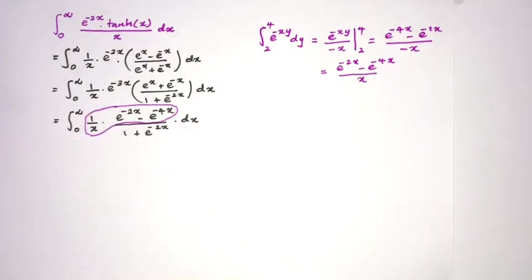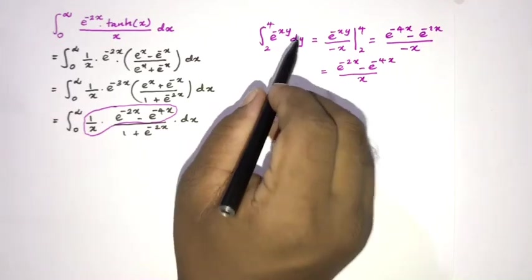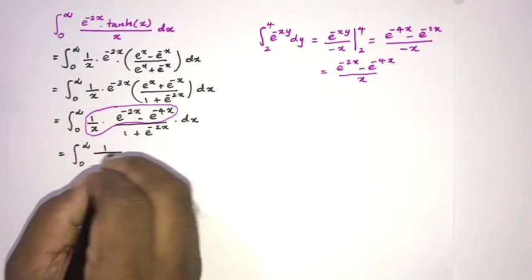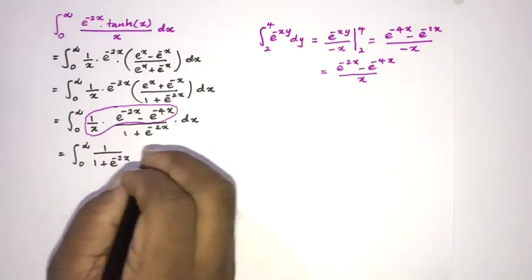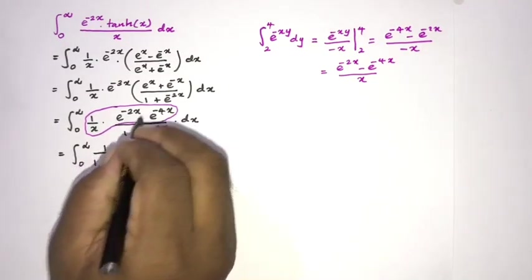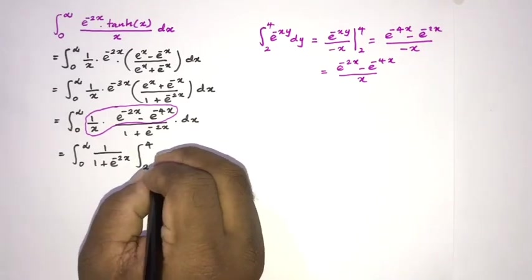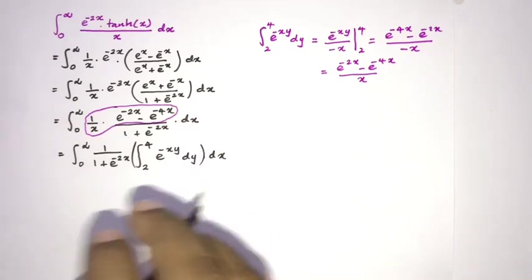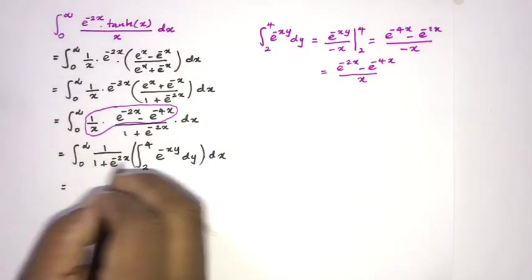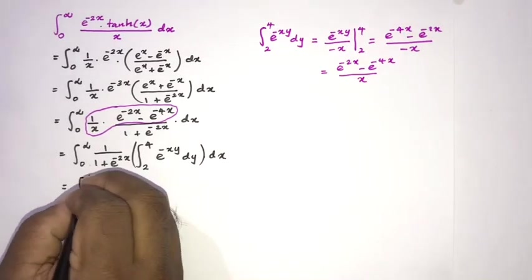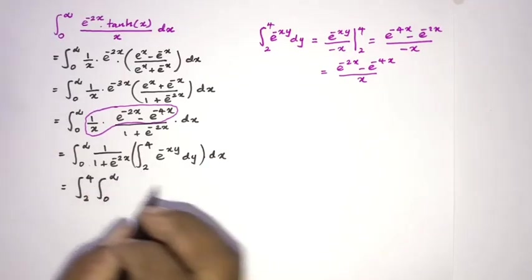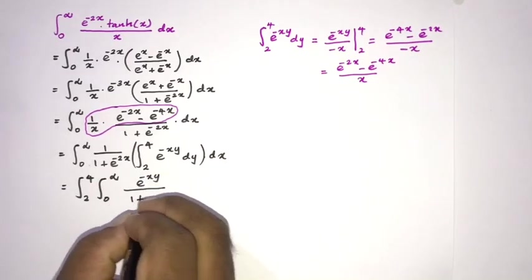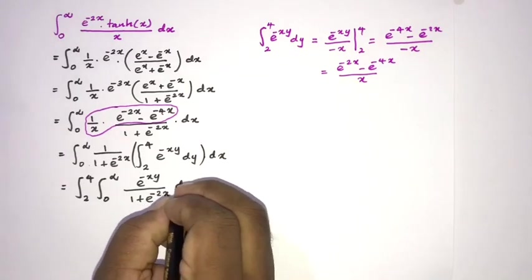Therefore, instead of (e to the minus 2x minus e to the minus 4x) over x, we can substitute the integral from 2 to 4 of e to the minus xy dy. So our integral becomes the integral from 0 to infinity of 1 over (1 plus e to the minus 2x), times the integral from 2 to 4 of e to the minus xy dy, dx. We then switch the order of integration to get the integral from 2 to 4 of the integral from 0 to infinity of e to the minus xy over (1 plus e to the minus 2x) dx, dy.